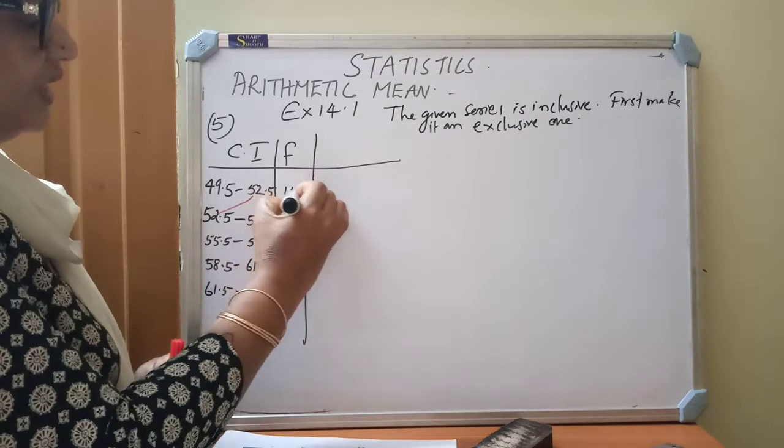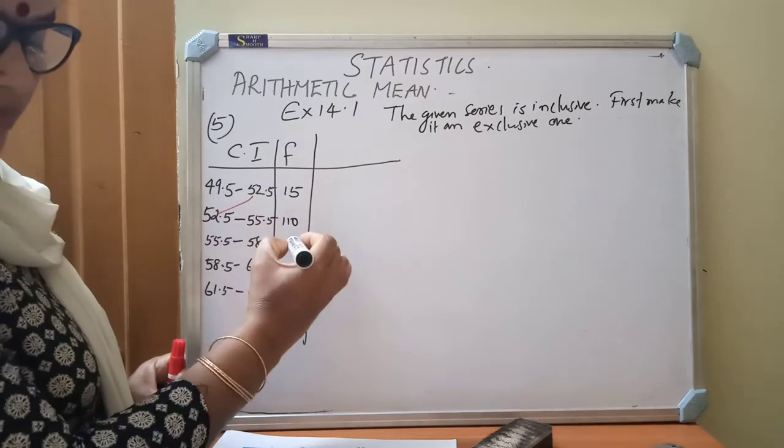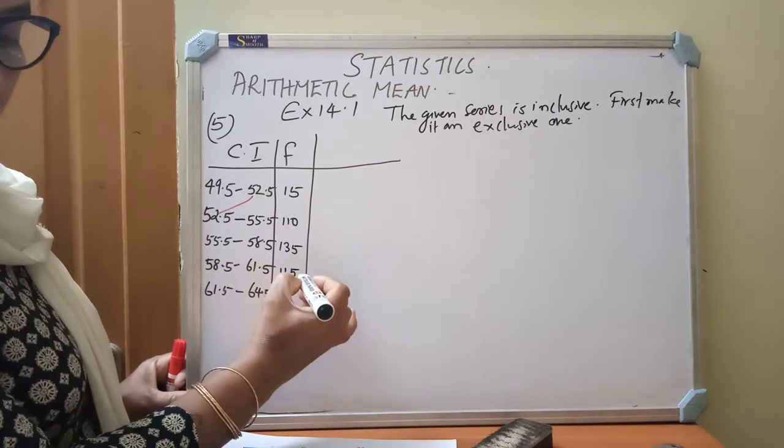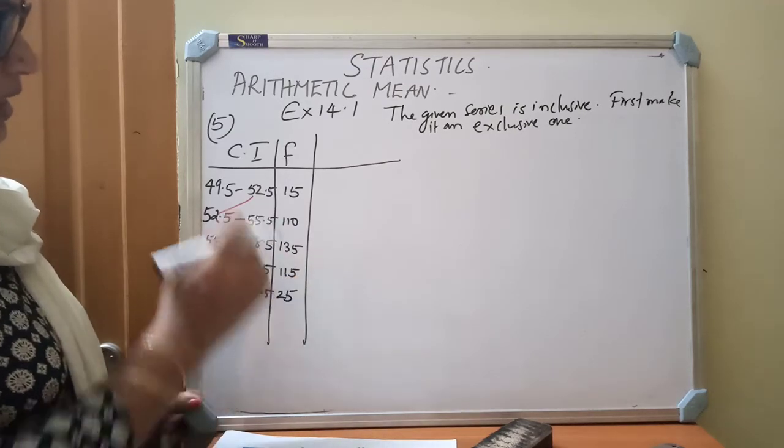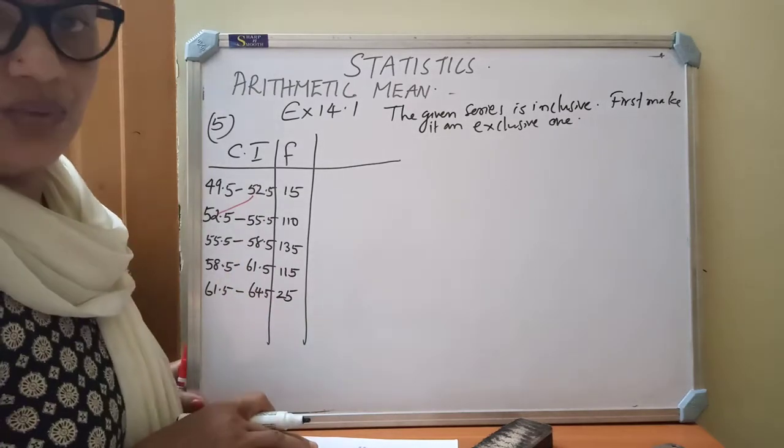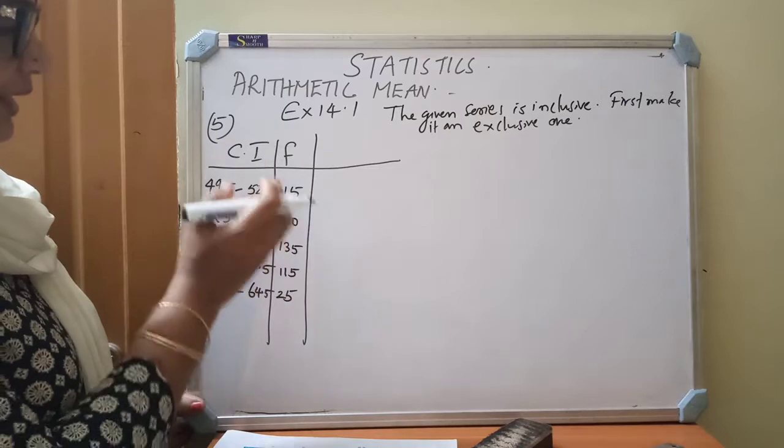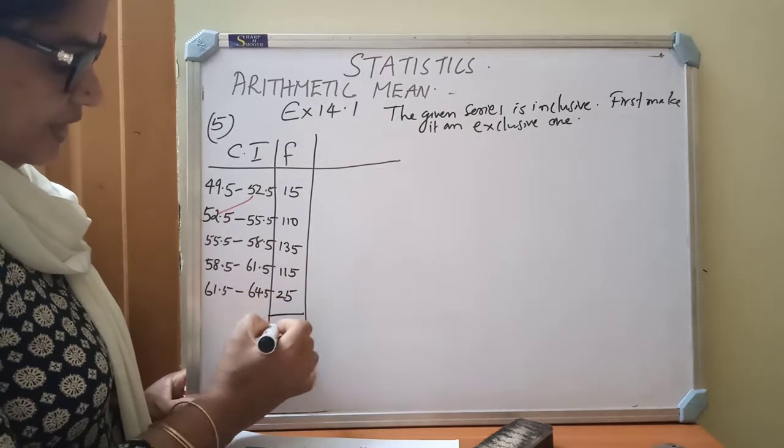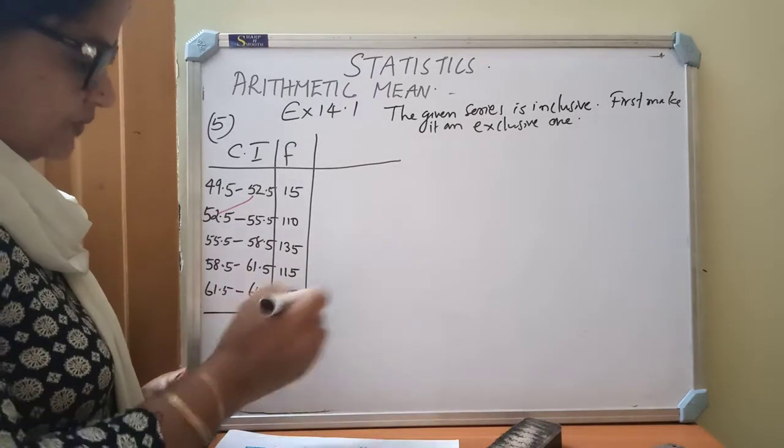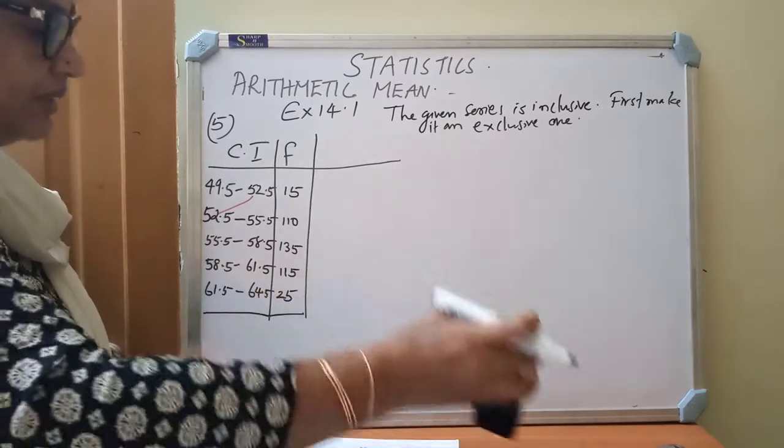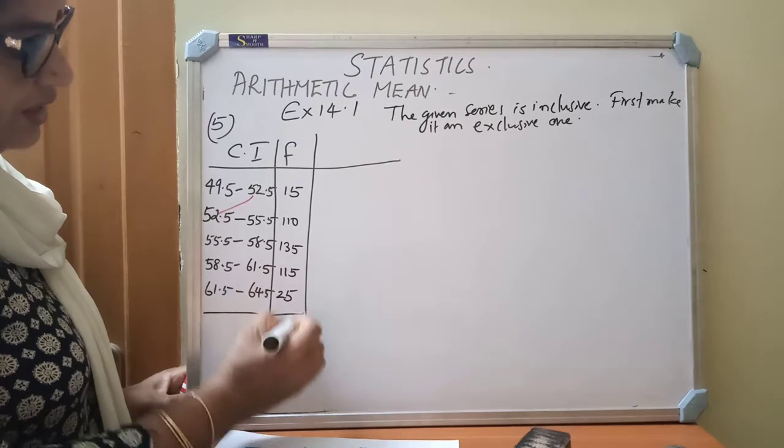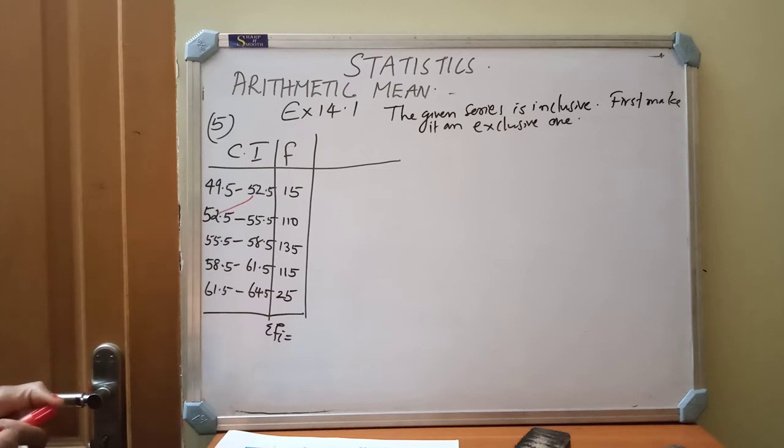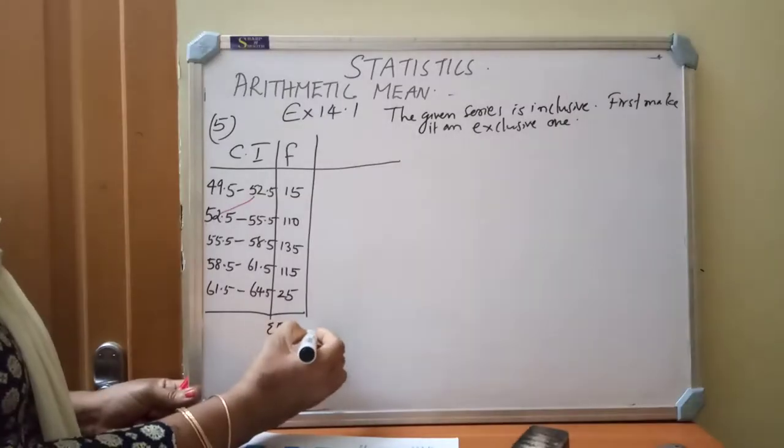Then frequencies 15, 110, 135, 115 and 25. These are the class intervals and frequency they are given in the questionnaire. First we made into an exclusive one as class intervals. Then frequencies is written. Now automatically after writing this, we must find out the sum of frequencies. What is sigma FI children? 300.